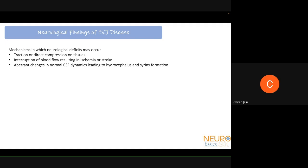In CV junction disease, neurological findings can occur because of multiple mechanisms. First, it could be direct compression of the tissues in that region, or traction. Second, it could be an interruption of blood flow causing ischemia or stroke. Third, you can also alter the CSF dynamics at the level of the foramen magnum, leading to both upstream and downstream problems — hydrocephalus and syrinx formation.